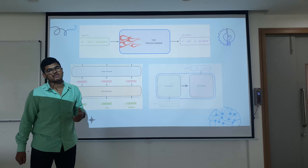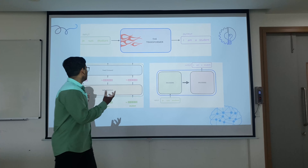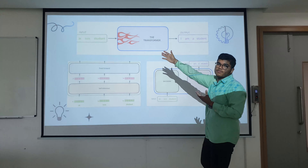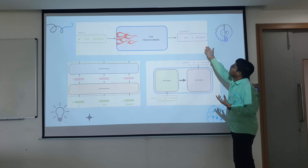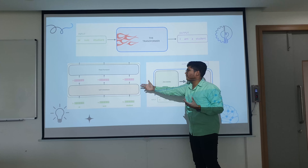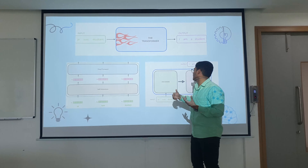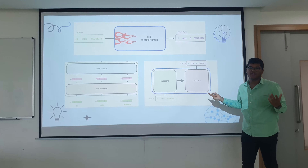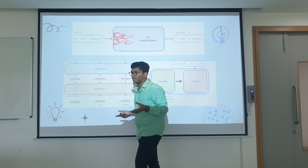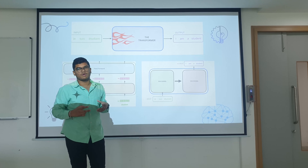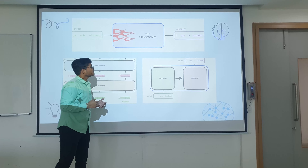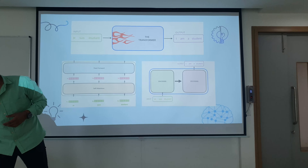Here is a visual of how transformers work: we give input in one language and get the output in English. The transformer applies a self-attention layer, then a feed-forward neural layer, then the encoder-decoder. That sounds simple, but the inner core of transformers is actually very difficult to understand.